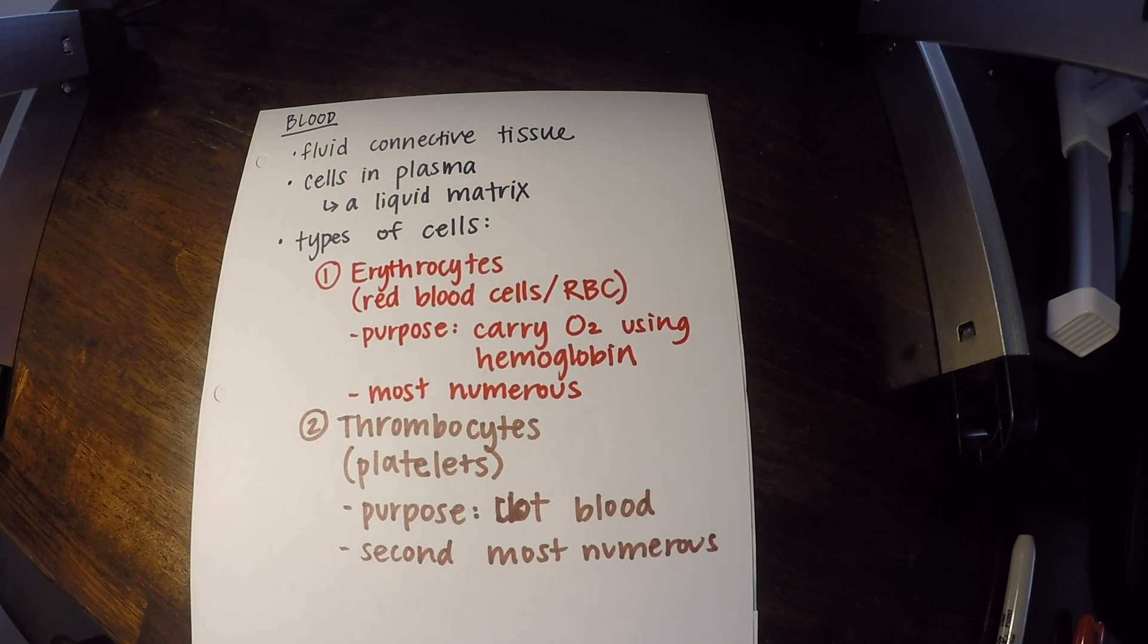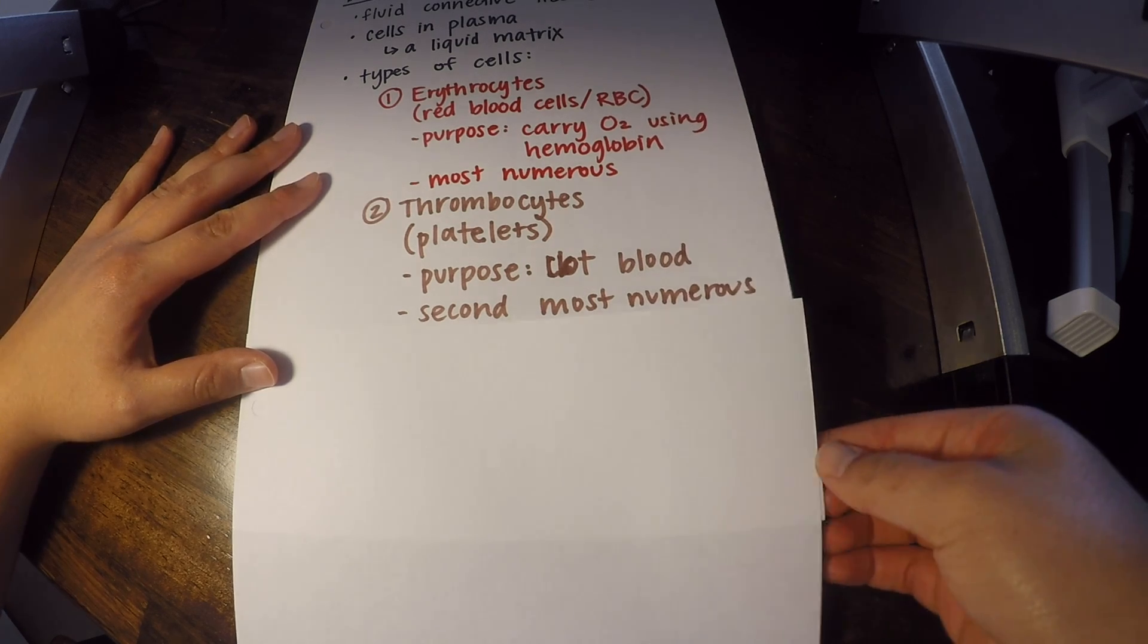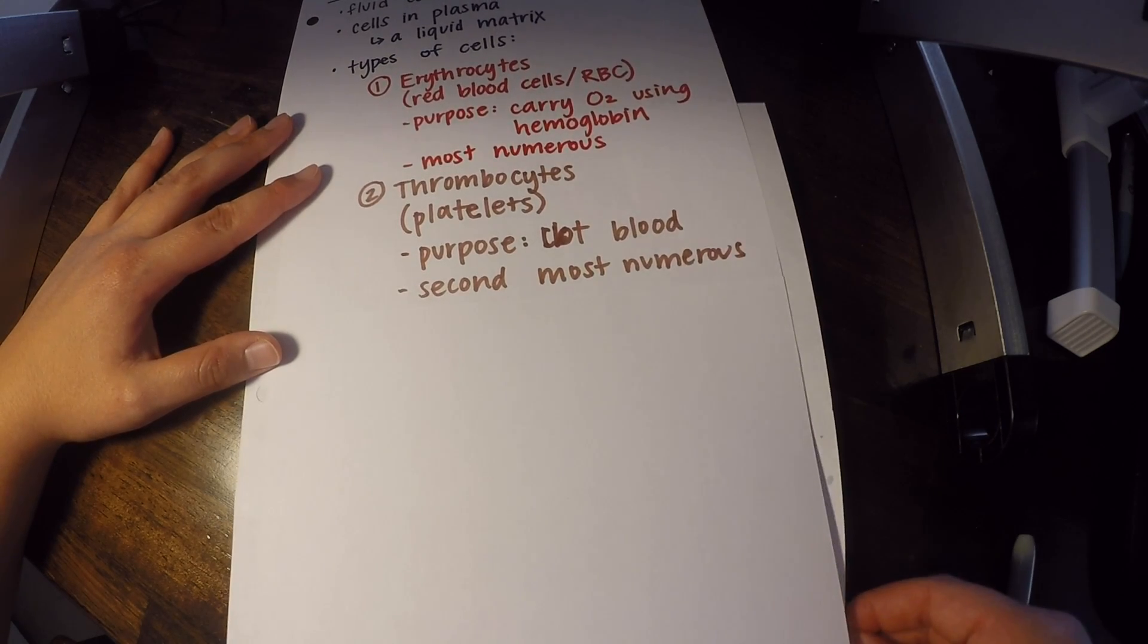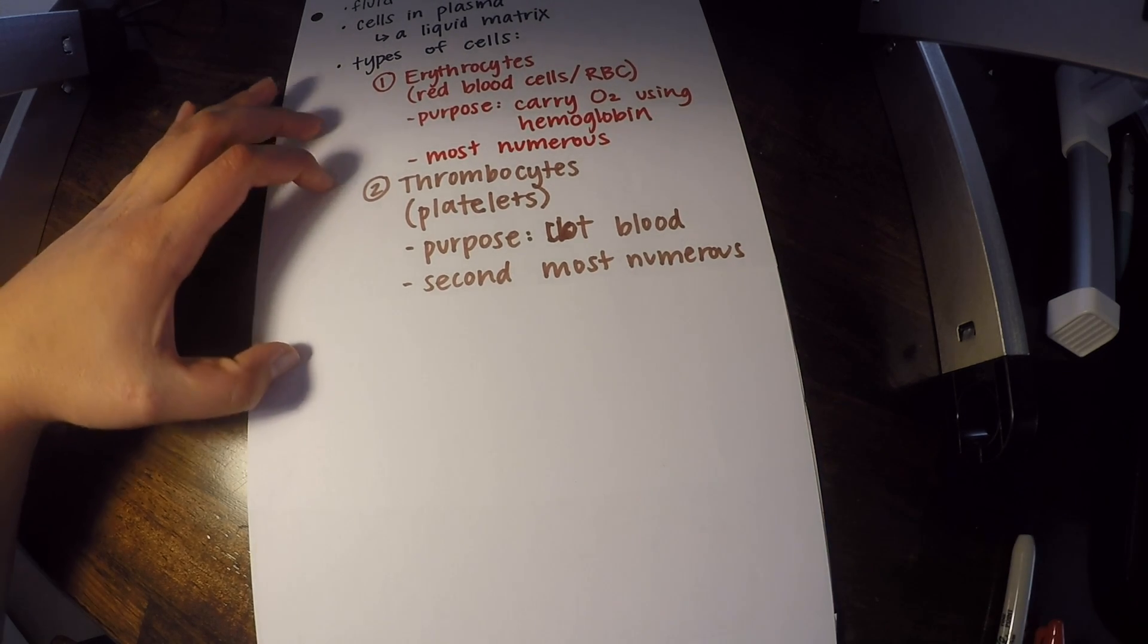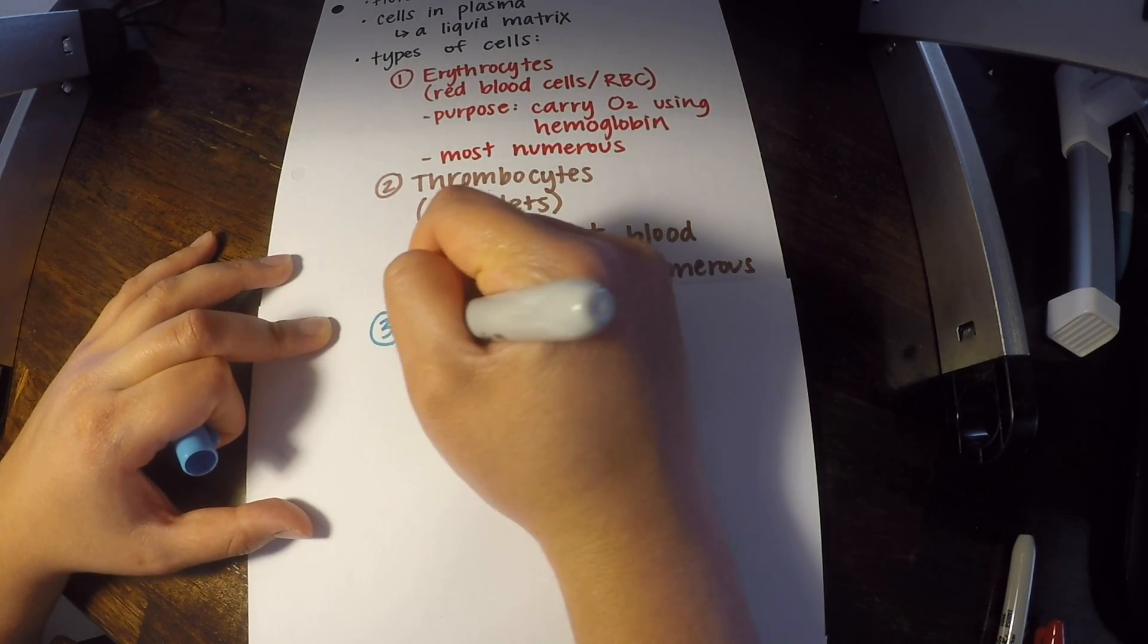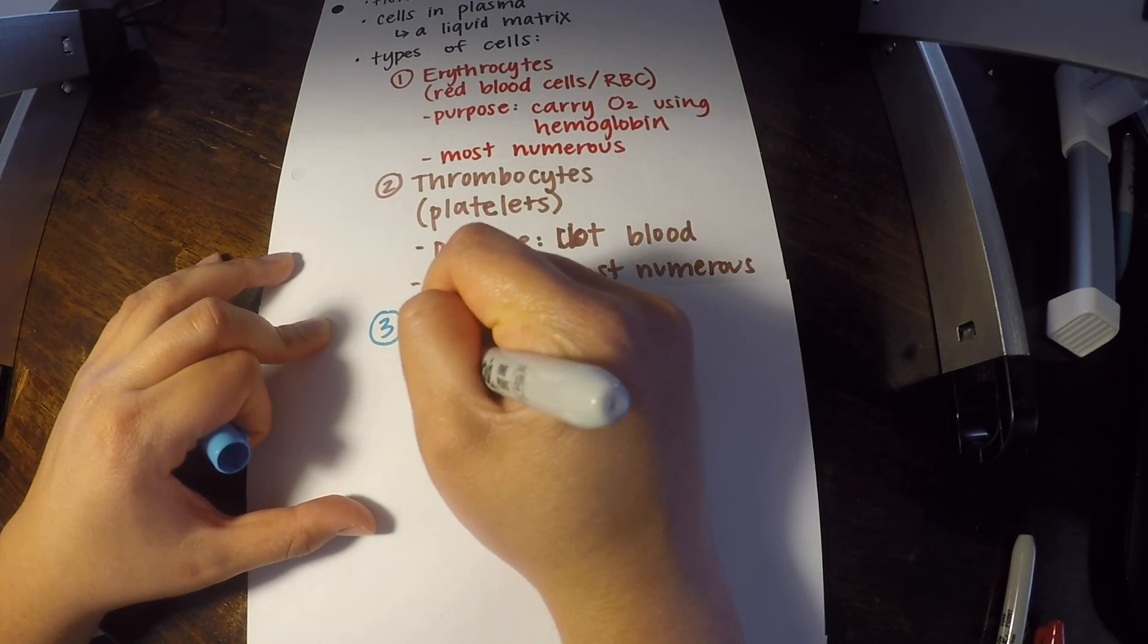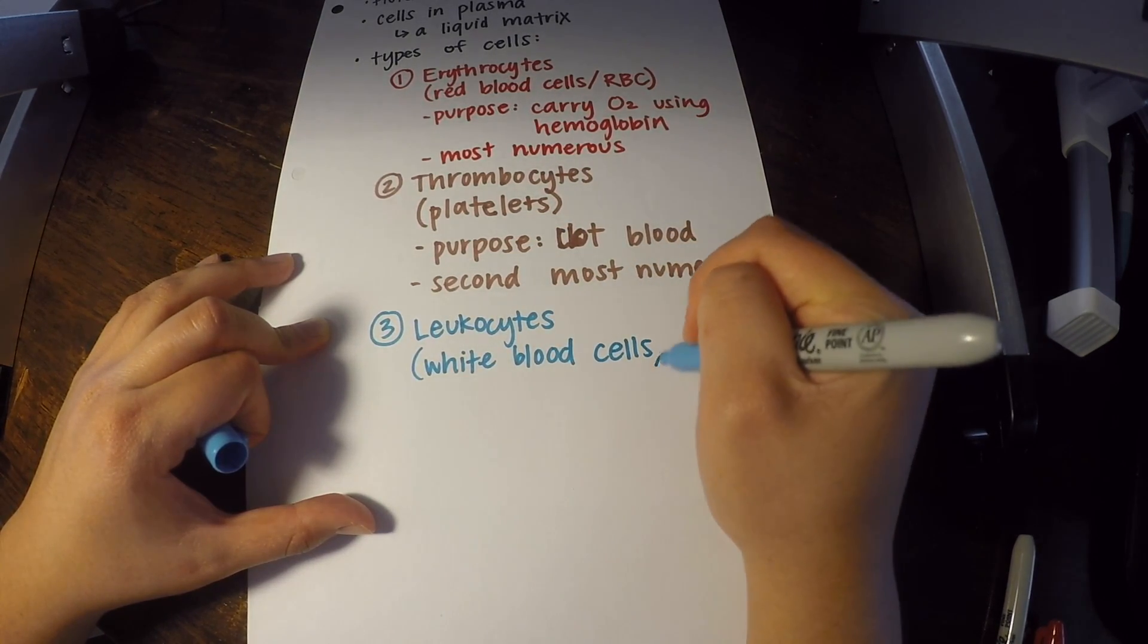Now let's talk about the last type of cell in blood. And we've kind of been going from most numerous to least numerous. So again, this is going to be the least numerous here. This third type of cell in the blood are called leukocytes, which are white blood cells, or WBC.